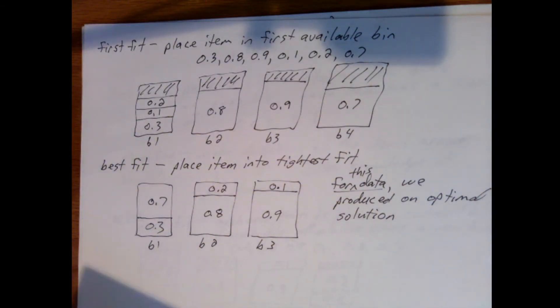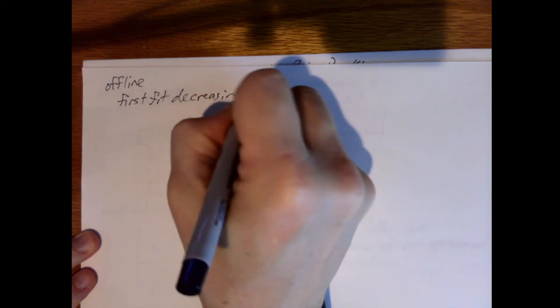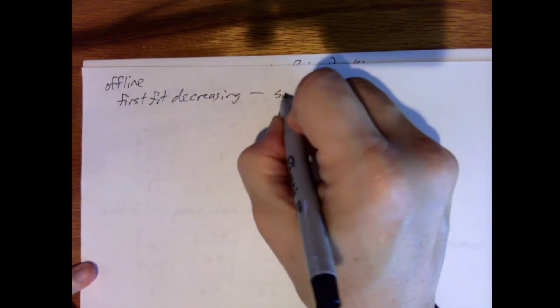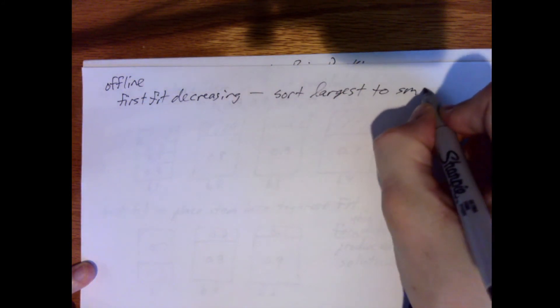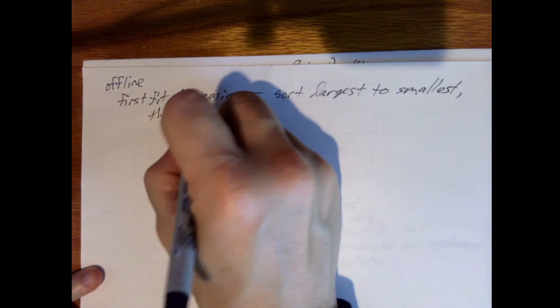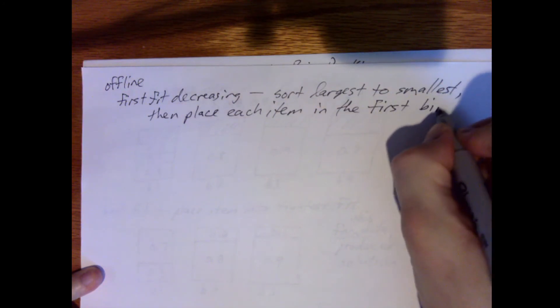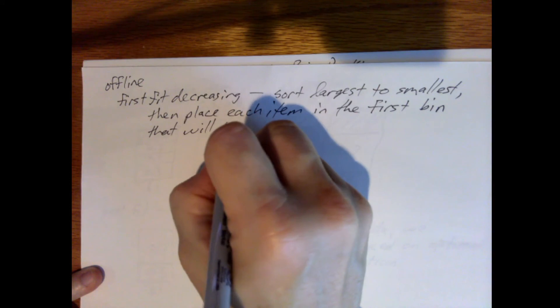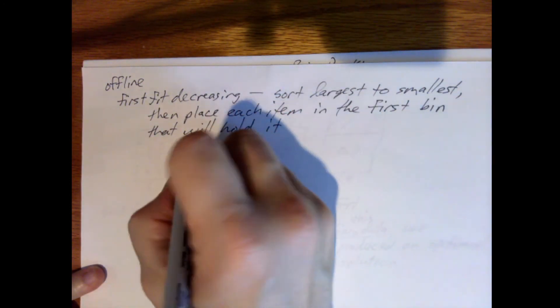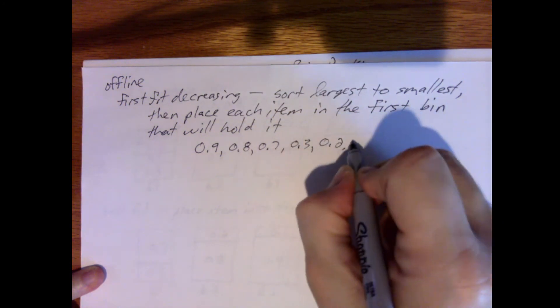All three of those were online algorithms. Now let's look at an offline algorithm called First Fit Decreasing. The way it works is: first, sort the items from largest to smallest, then place each item in the first bin that will hold it. Sorting our data gives us: 0.9, 0.8, 0.7, 0.3, 0.2, 0.1.